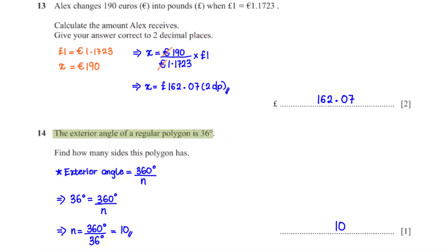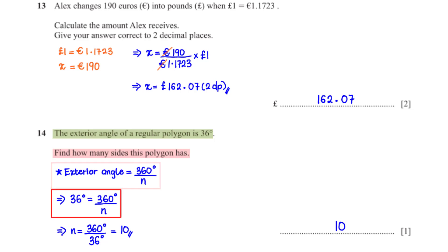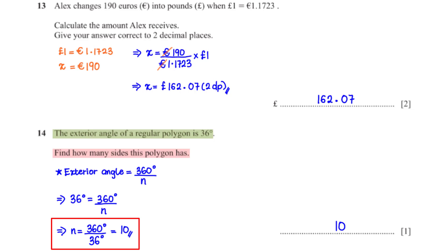The exterior angle of a regular polygon is 36 degrees. Find how many sides this polygon has. Using the formula for the exterior angle of a regular polygon — exterior angle = 360/n — we substitute 36 degrees, make n the subject, and get n = 10.